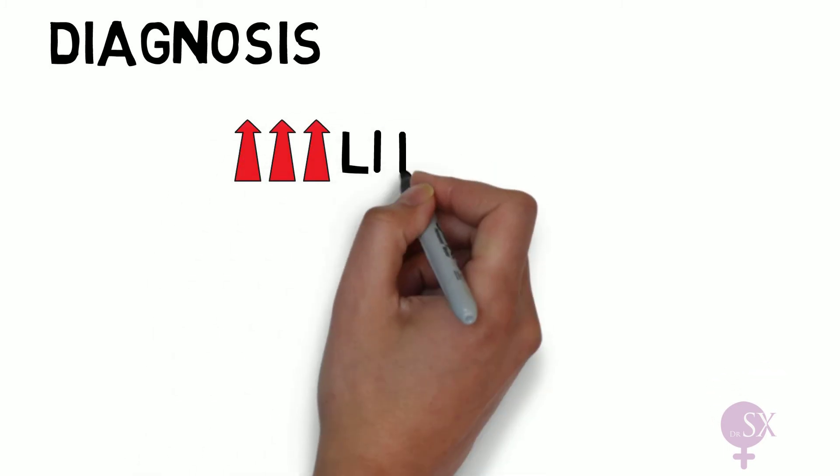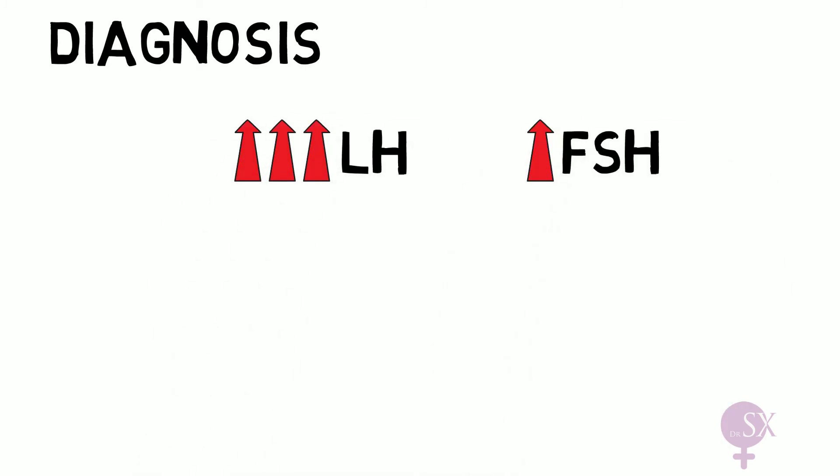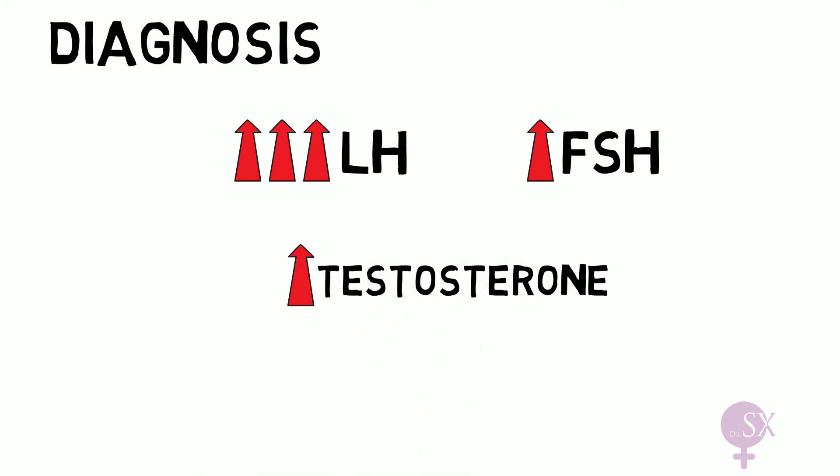For diagnosis, blood tests will identify very high LH levels in comparison to FSH levels, and high testosterone levels due to the hyperandrogenic effect. A transvaginal ultrasound is also performed to look for polycystic ovaries; however, as discussed, she may still have PCOS without having polycystic ovaries.